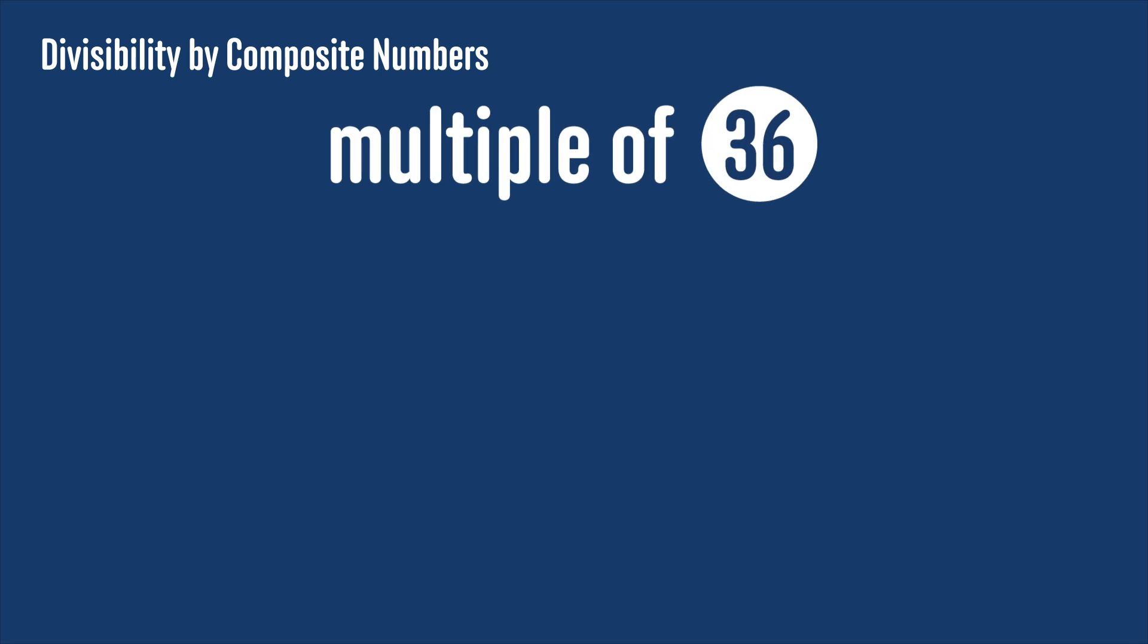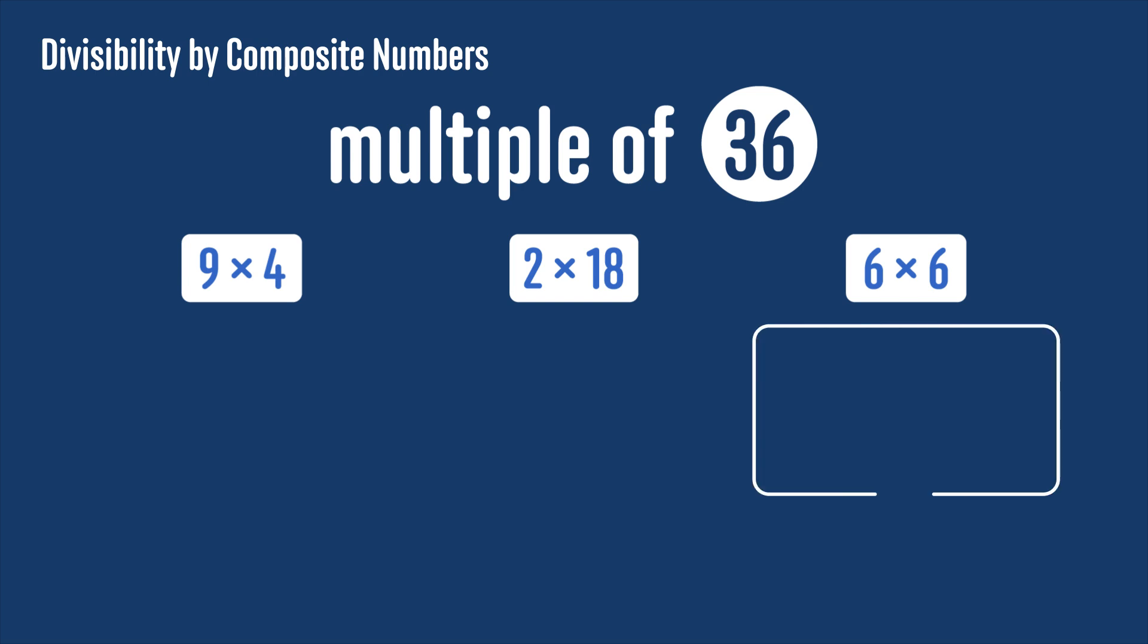To take another example, 36 is 9 times 4, but it's also 2 times 18 and 6 times 6. If we use 6 times 6, then clearly we can't just check if the number is divisible by 6 and 6 to see if it's divisible by 36, otherwise we'd have to conclude that 6 is a multiple of 36, which of course it isn't.